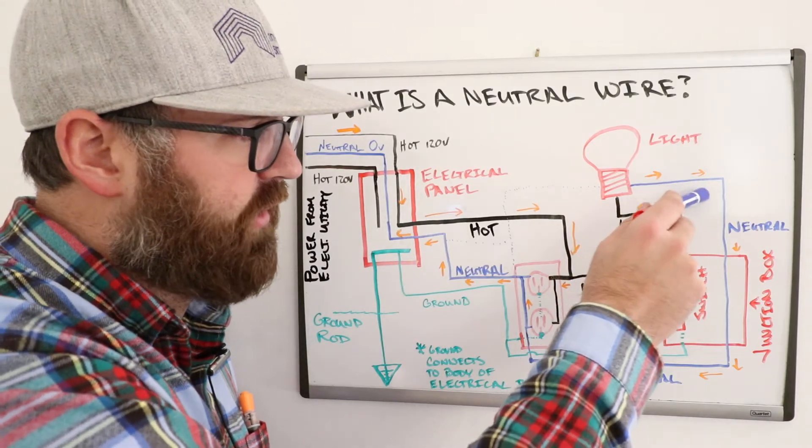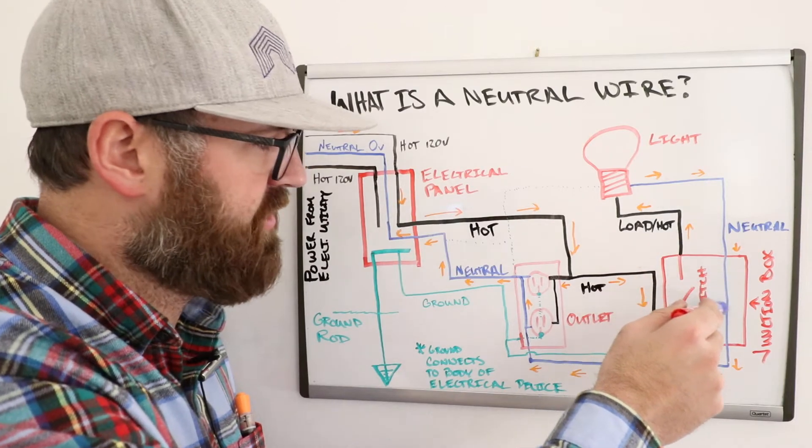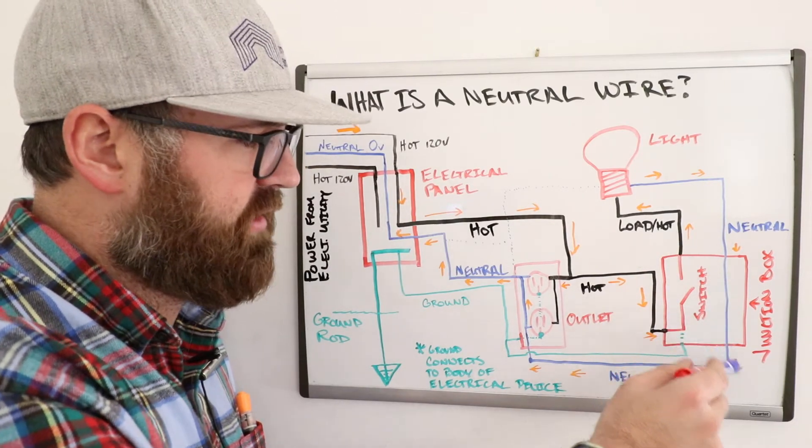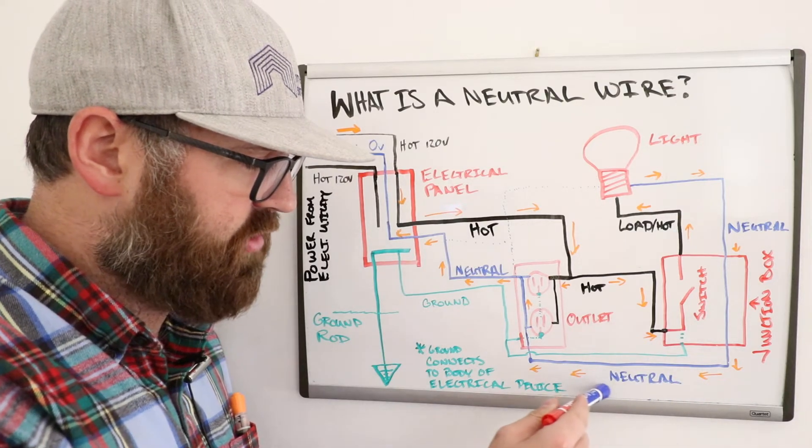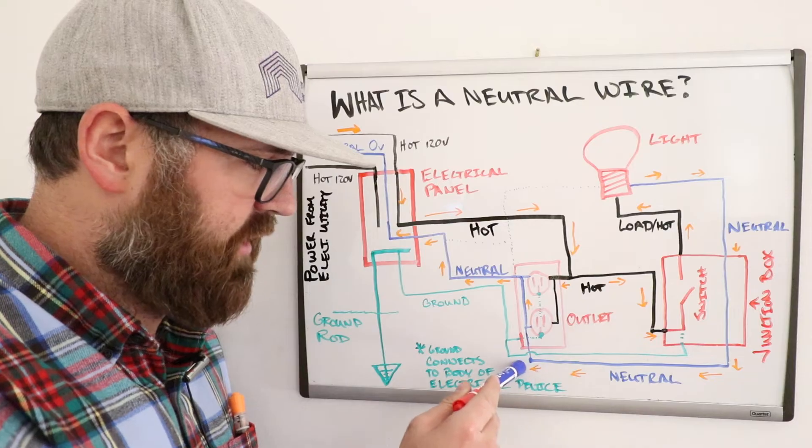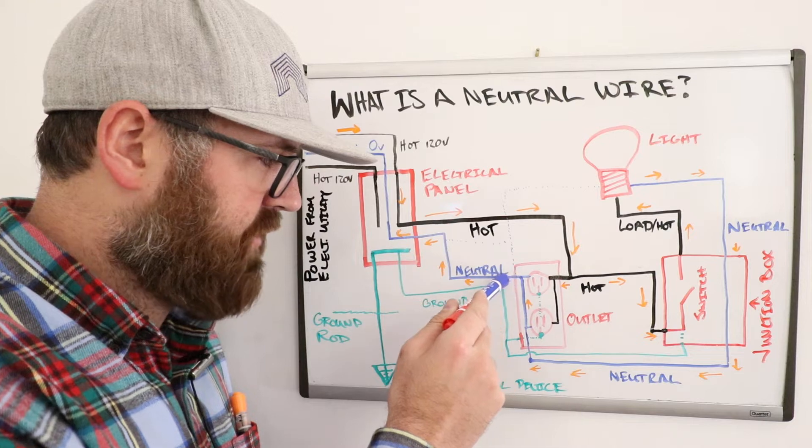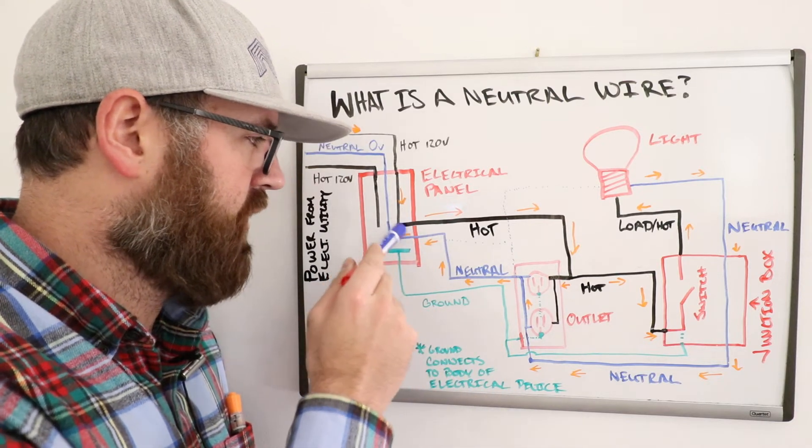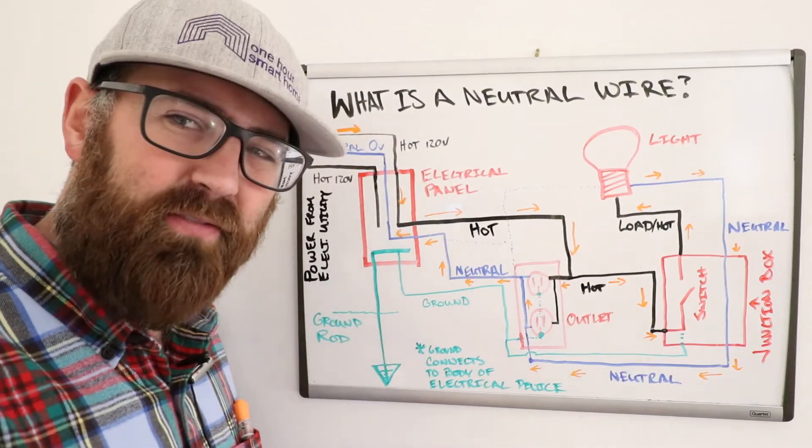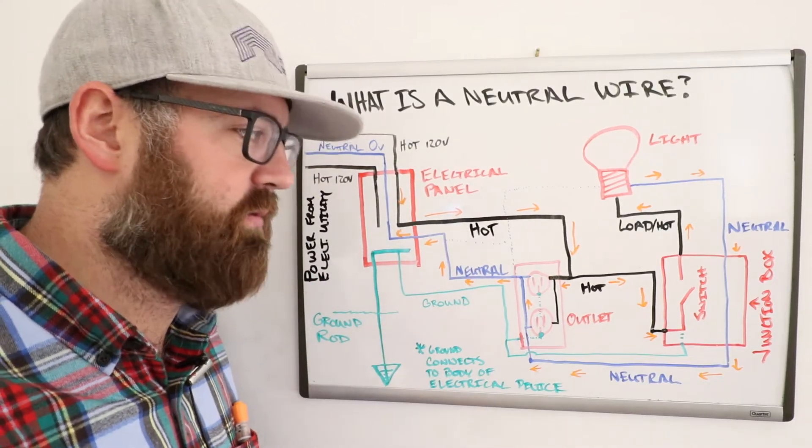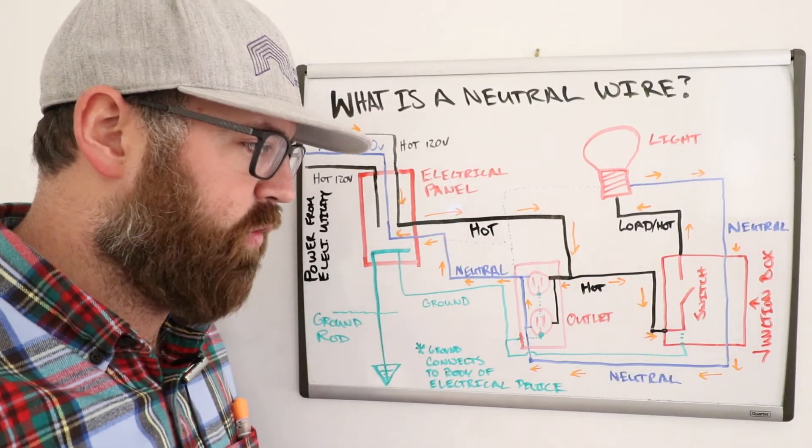Once that power goes through the neutral wire, it's coming back. It's returning. It wants to return back to the electrical panel. You can follow along here. Follow the orange arrows. Goes to the neutral wire. Most likely, it is connected at our outlet. It's going to flow past the outlet back to this neutral wire that is connected to the circuit breaker in the electrical panel here. That is the path of a neutral wire. That is what a neutral wire is. A neutral wire is a return path for current. We've shown you how an electrical circuit, a typical one, will work.